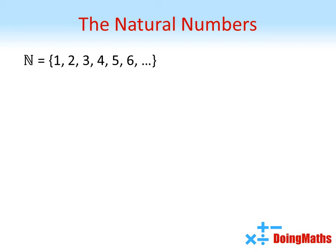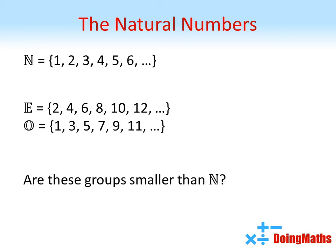Contained within the natural numbers are two more sets, the positive even numbers and the positive odd numbers. Now you would think that as each of these sets contains half of the natural numbers, they should be half the size of N. But is this the case?